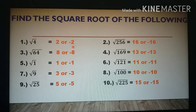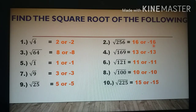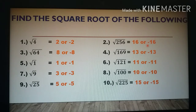Also for 256, the square roots of 256 are 16 or negative 16. Always include the negative, because when we multiply negative 16 by itself — negative 16 times negative 16 — the product is also 256, not only positive. So there are always two answers.